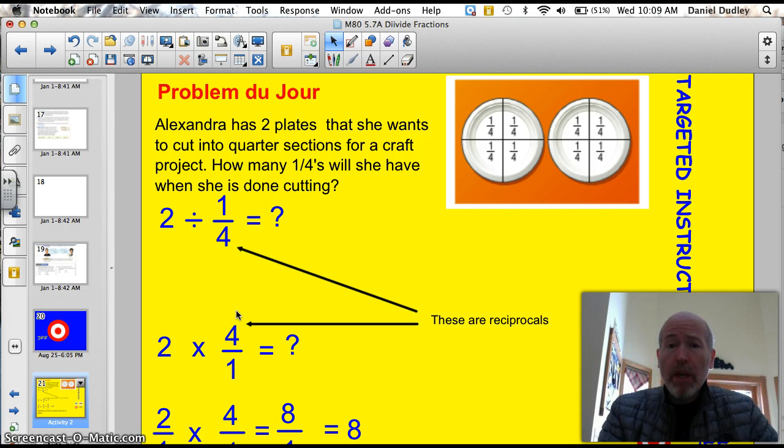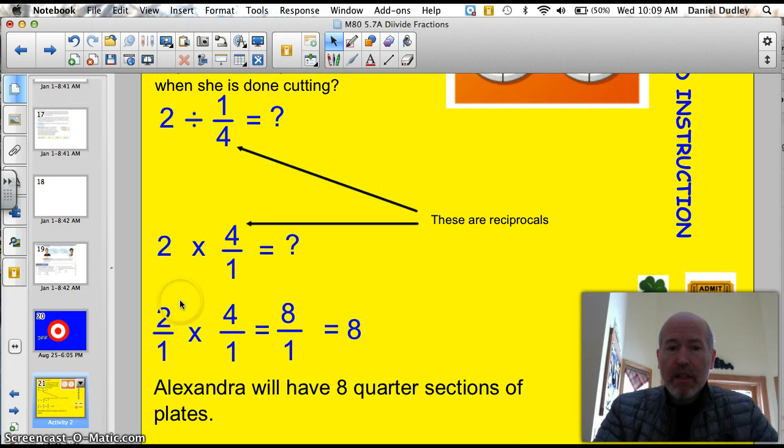You multiply by the reciprocal. You just flip it. So, instead of 2 divided by 1 quarter, it's 2 times 4 over 1. Remember, these two are reciprocals. We learned that last lesson. Well, let's do it. 2 times 4 is 8. 1 times 1 is 1. So, you got 8 over 1, which is 8.